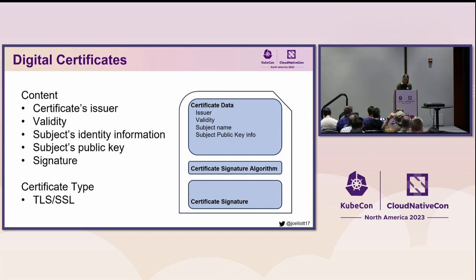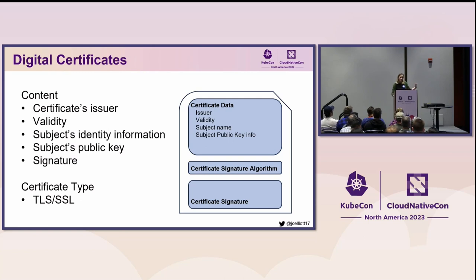Let's dig into what makes up a digital certificate. These are not all of the fields — just some common ones relevant to this presentation. First, you have the issuer: the name of the trusted entity that issued or signed your certificate. Then the validity period, which specifies how long the verified identity document can be used to establish trust — a shorter validity period helps reduce vulnerability if the issuer's validity is ever compromised. The subject name contains the identity information, and the subject's public key is the actual public key tied to that identity.